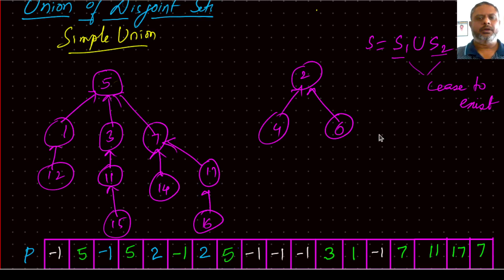After seeing the disadvantages of this simple union, which is going to make the search process a little costlier if we do it wrongly, then instead of a simple union, we can look for something called weighted union.